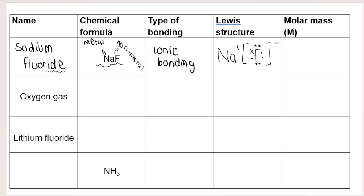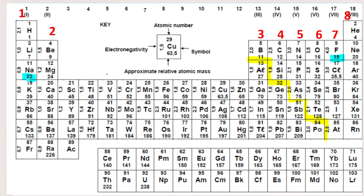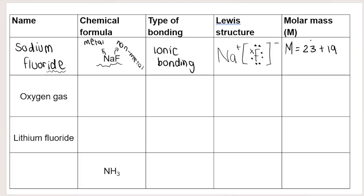Then they want molar mass, represented by the symbol big M. This is based on the atomic masses of the elements that make up the compound. We look at the periodic table for the relative atomic mass — the bigger number. Sodium has an atomic mass of 23 and fluorine is 19. There's only one sodium and one fluorine, so 23 plus 19 gives us 42 grams per mole — that is the unit for molar mass.